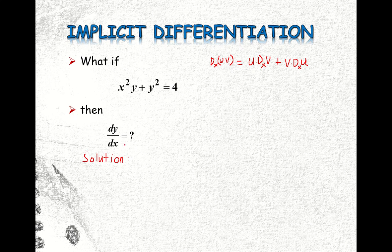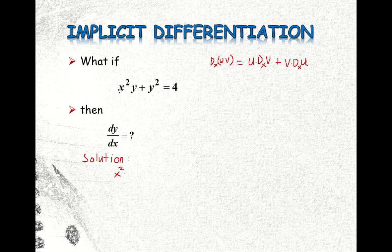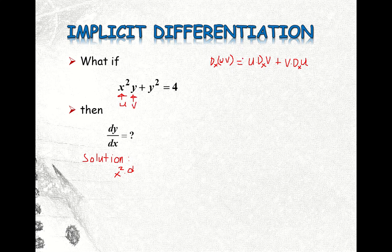So here, our first factor is x squared. So you just write down x squared — that is the first factor of the first term — then multiplied by the derivative of the second factor. This is our u, this is our v. Following this formula, the derivative of v: if you compare with our formula, x squared is u and y is our v. So the derivative of the second factor, which is y, with respect to x.